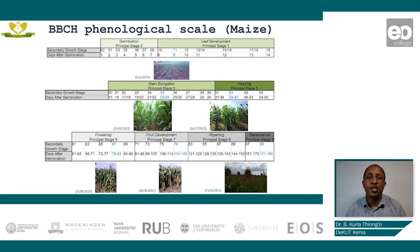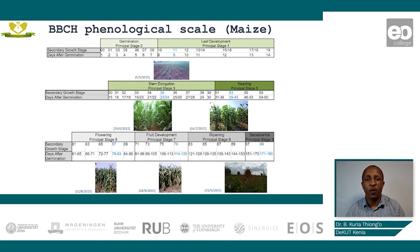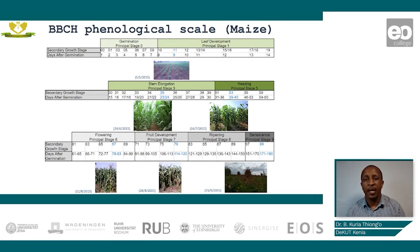These principal stages are later divided into secondary growth stages defined by the photos. For example, the first photo defines secondary growth stage eleven, whereas the last photo defines principal growth stage ninety-nine.